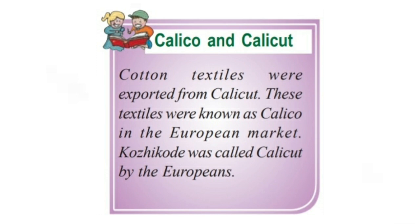There is a connection between Kozhikode and medieval times — Calico and Kozhikode. Cotton textiles were exported from Kozhikode and these textiles were known as Calico in the European market. Kozhikode was called Calicode by the Europeans, and from there these textile goods were exported to other countries.